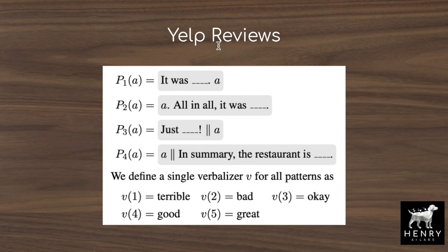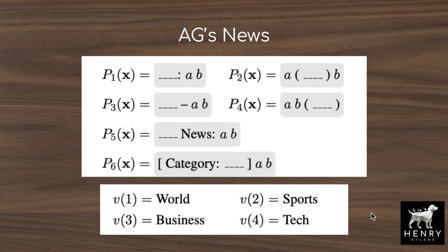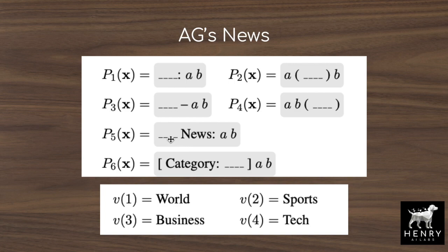The authors also test on the AG's News classification dataset, where the task is to take A (the article title) and B (the article content) and classify it into categories like world, sports, business, or tech. Patterns include '[MASK]: title, article,' title interleaved with [MASK] then the article, or the label after the title-article pair. More clever templates include '[MASK] news: title, article,' or using square brackets like '[Category: business] title, article.'